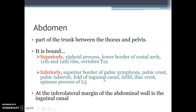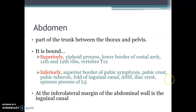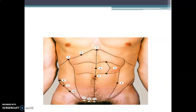Moving from the midline inferiorly: pubic symphysis, pubic crest, pubic tubercle, the fold of the inguinal canal. Laterally, the anterior superior iliac spine, then the iliac crest, and posteriorly to the spinous processes of the fifth lumbar vertebra. The inguinal canal is located at the inferolateral margin of the abdominal wall.